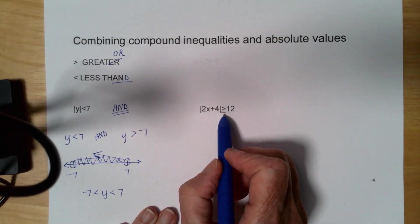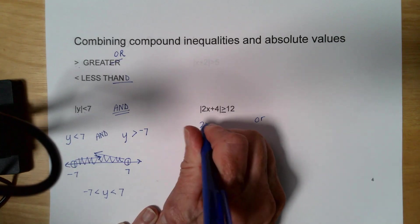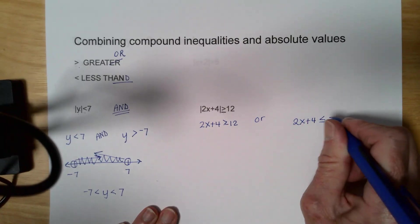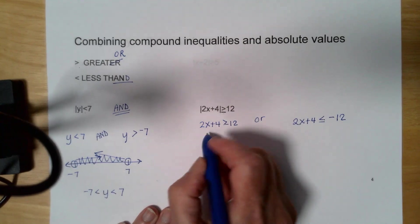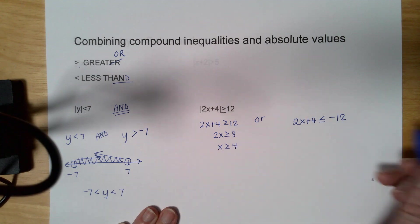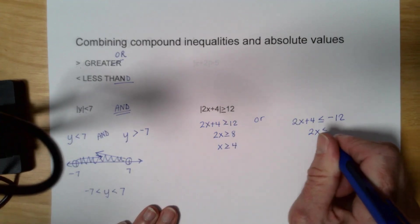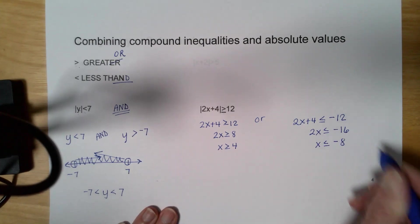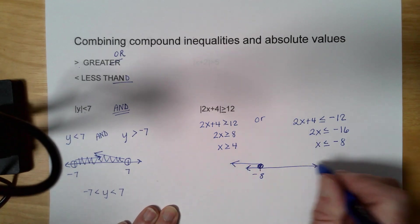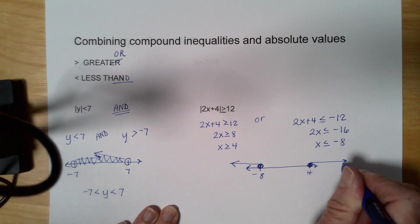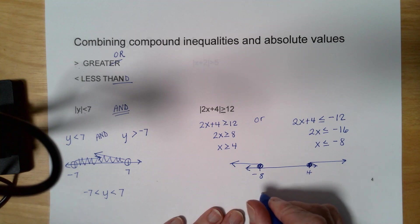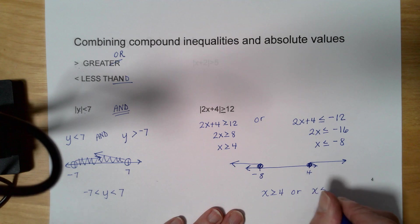This one has a GREAT-OR sign, so it's an OR statement. I have 2x plus 4 is greater than or equal to 12, and 2x plus 4 is less than or equal to negative 12. Solving: subtract 4 to get 2x is greater than or equal to 8, divide to get x is greater than or equal to 4. For the other: subtract 4 to get negative 16, divide to get x is less than or equal to negative 8. On the number line: negative 8 is a closed circle going left, positive 4 is a closed circle going right. They don't have anything in common, but this is an OR so that's fine. x is greater than or equal to 4 or x is less than or equal to negative 8.